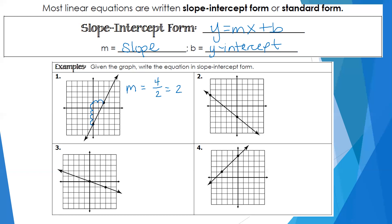The y-intercept is where the line crosses the y-axis, and that's at negative three. Now I have the slope and the y-intercept, so I can write my equation: y equals mx plus b, where m is two and b is negative three. So the equation is y equals 2x minus 3.